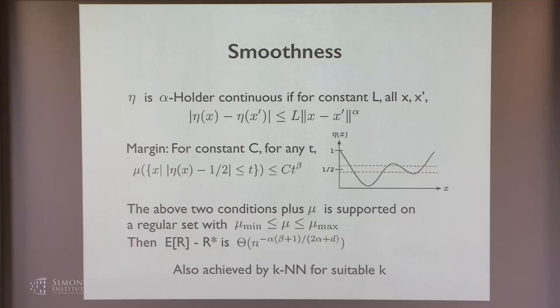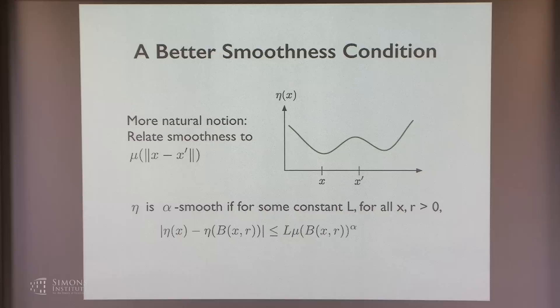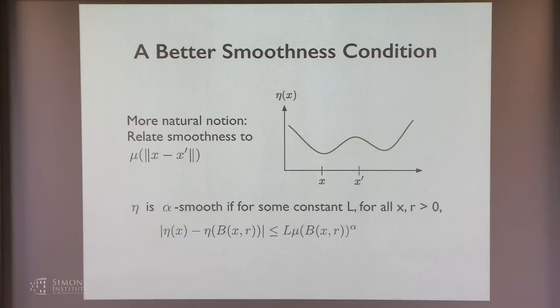But based on our way of looking at things, we can define a different, more natural notion of smoothness: instead of relating smoothness to the distance between x and x prime, we relate smoothness to the probability mass of a ball of radius equal to the distance between x and x prime.